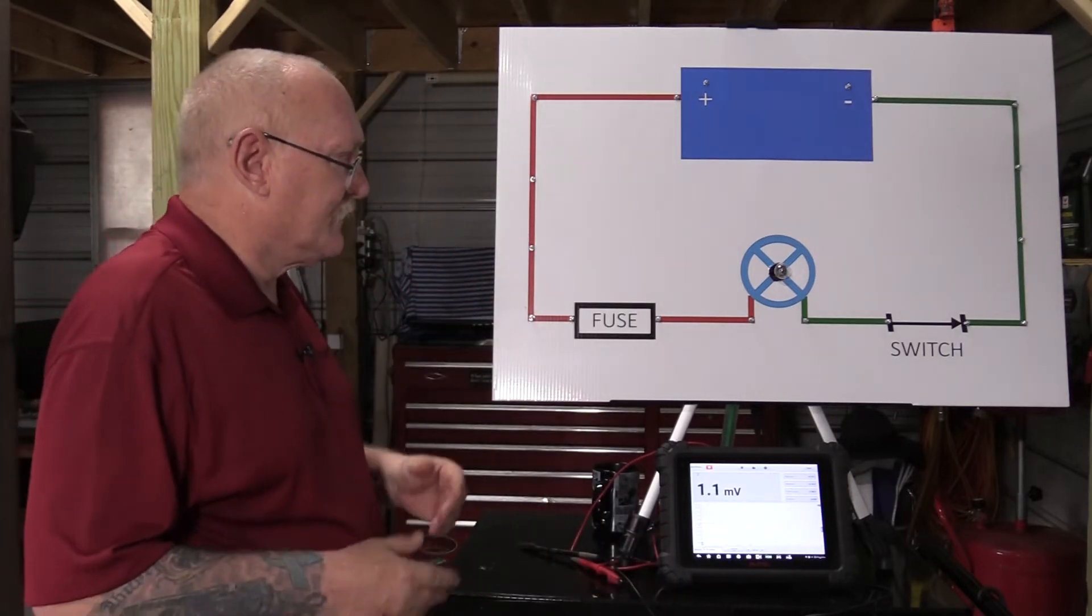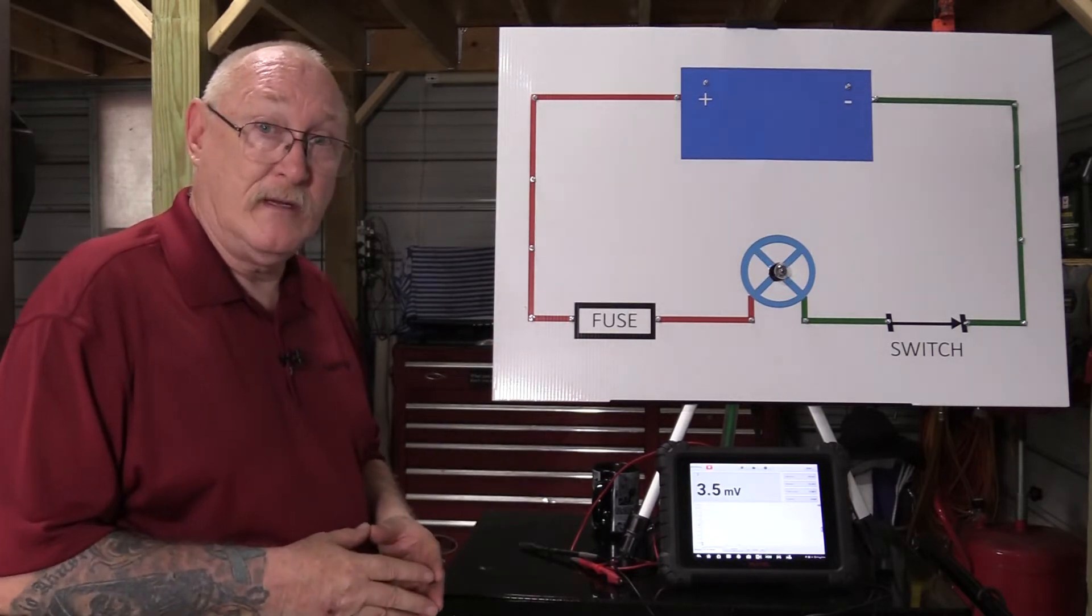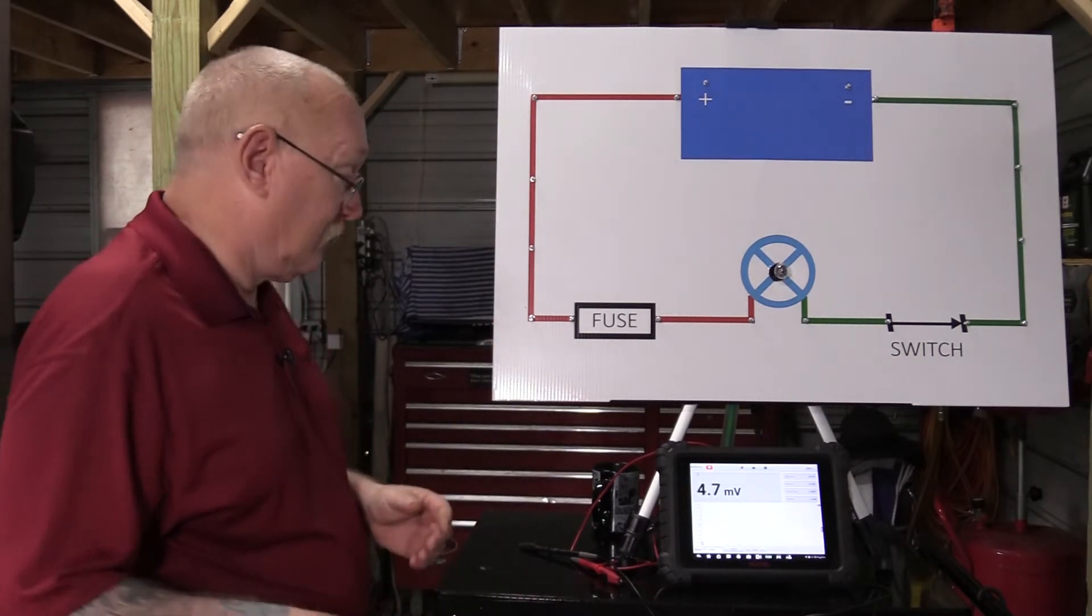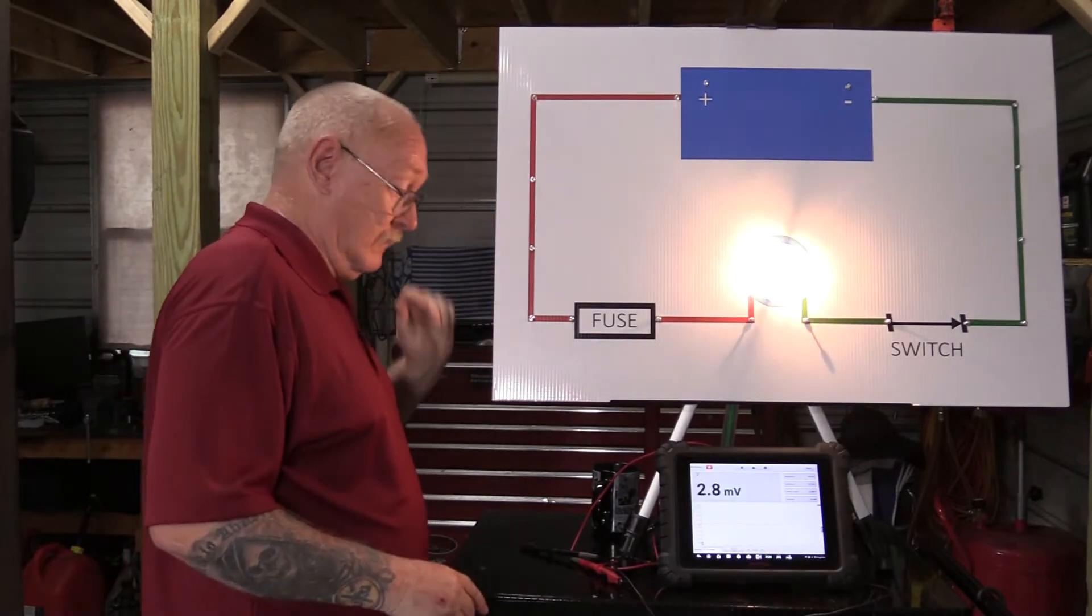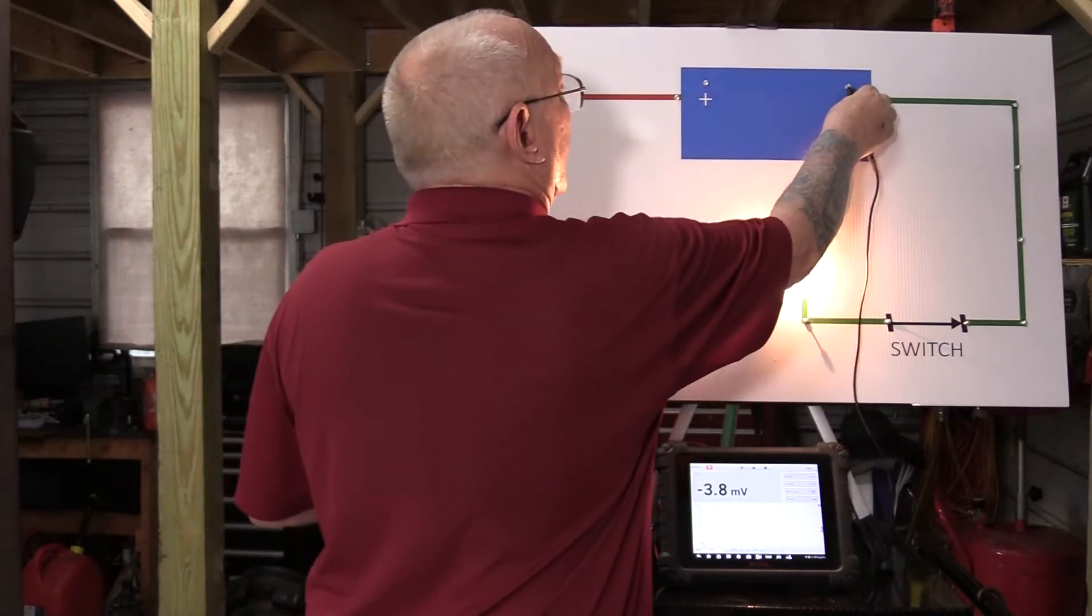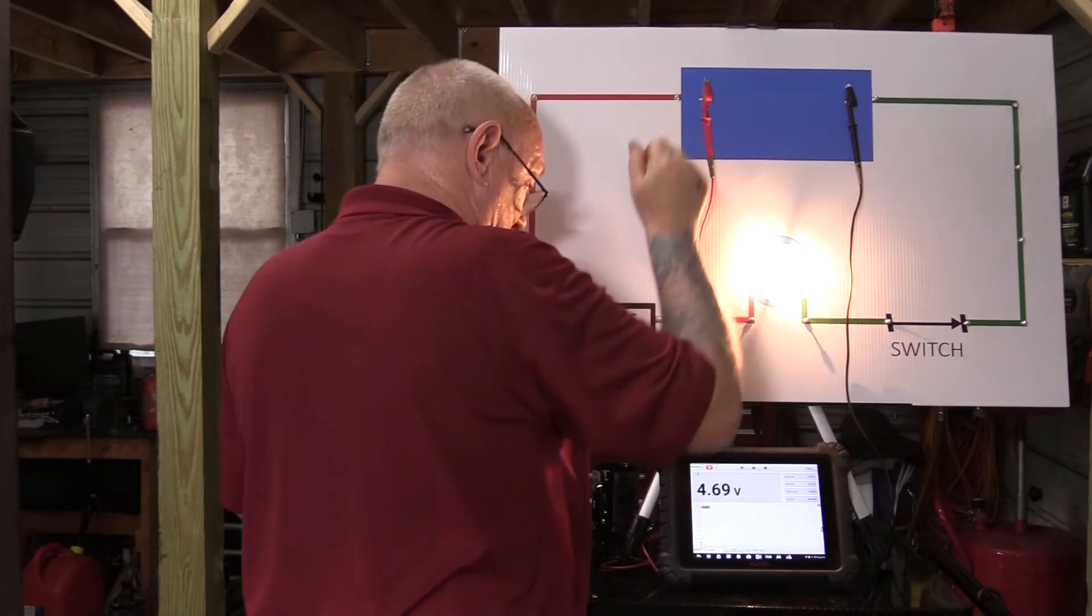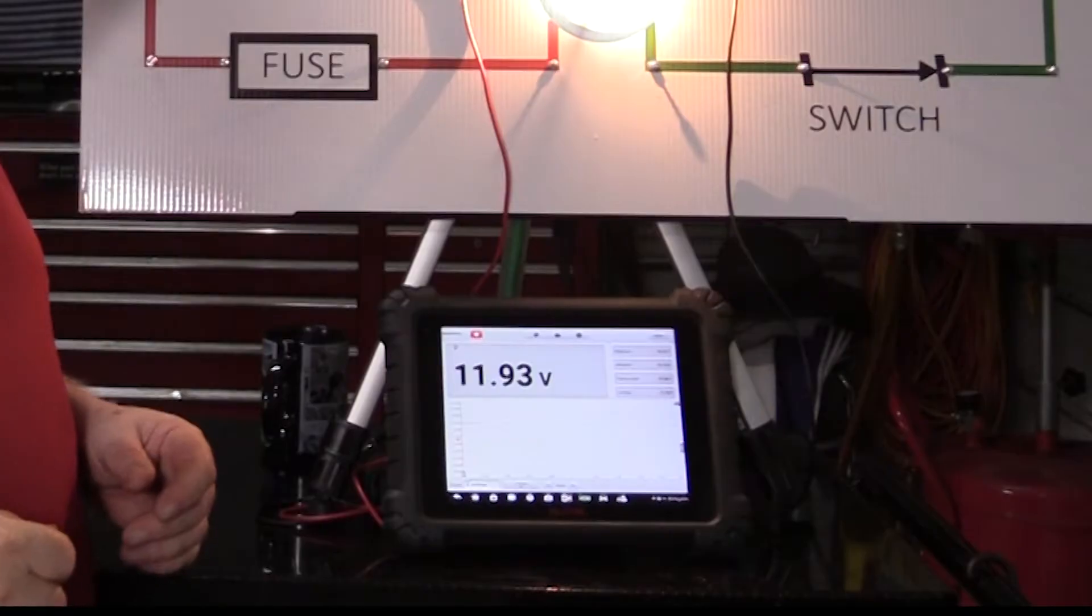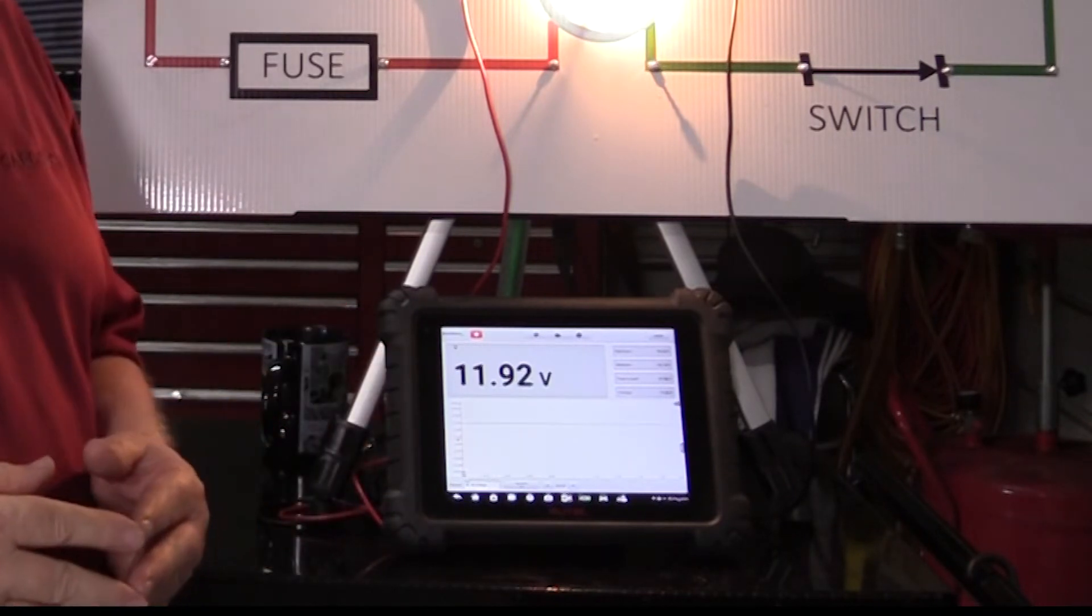Here's a sample circuit using a simple light bulb. Let's say we go ahead and turn that light bulb on and measure the voltage at the battery. You'll note the reading on the meter is 11.93 volts.